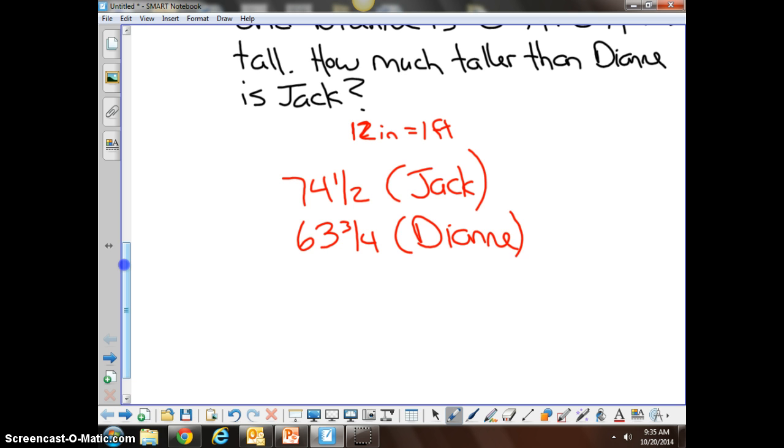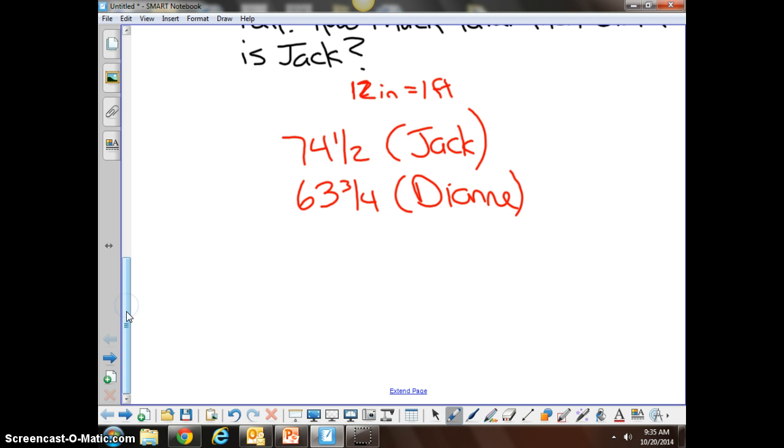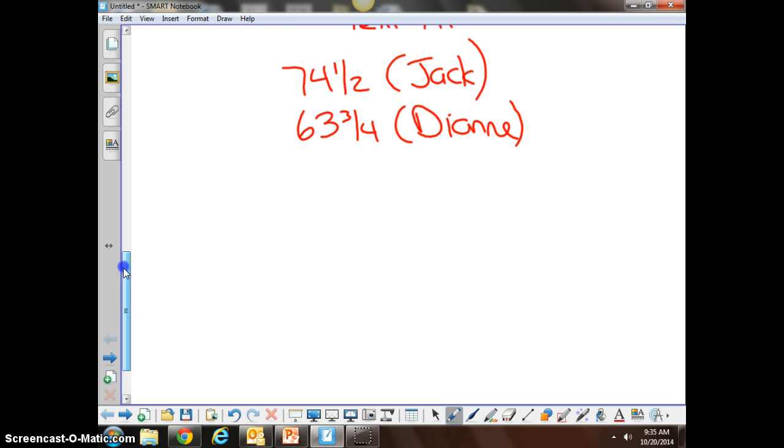Now I have myself a nice little mathematical problem. I need to know the difference between Jack and Diane, and I'm going to express my answer in inches. So I'm going to rewrite my problem as 74 and 1/2, which is Jack's height, minus 63 and 3/4, which is Diane's height.